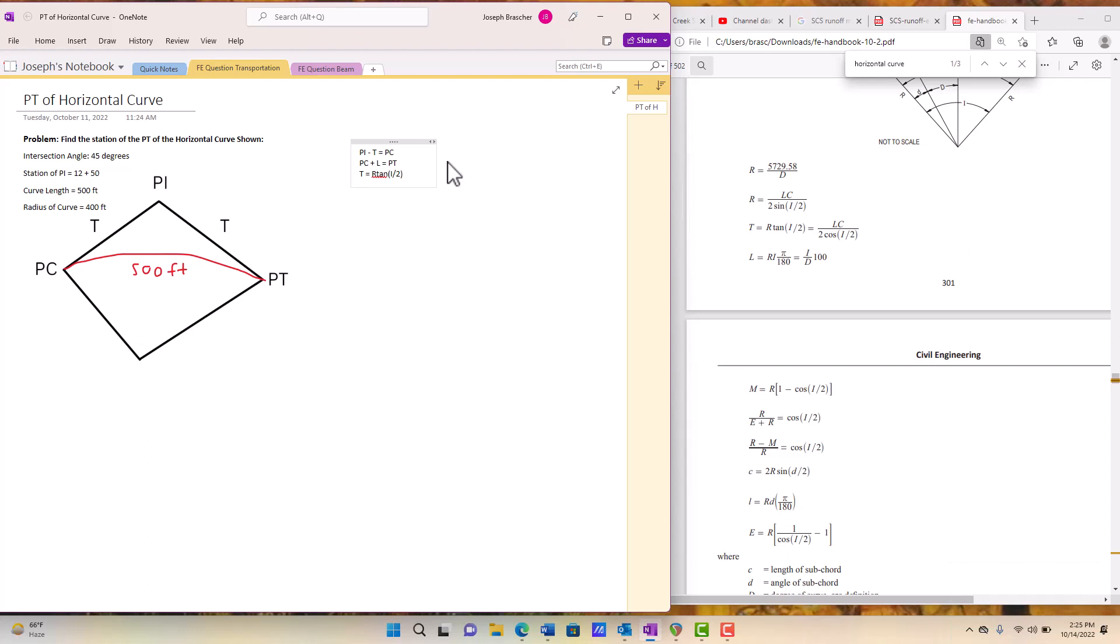Tangent equals R times the tangent function of the intersection angle divided by two. And so that's the equation we're going to use to solve this to find that tangent length, subtract from the PI and then add the total length to get the final answer.